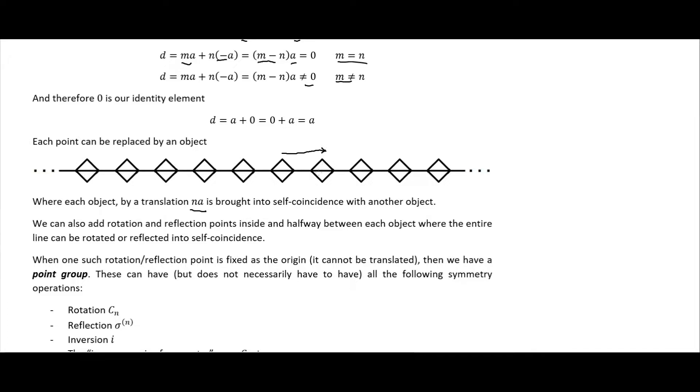We can also add points inside or at some place between two of them where now we could rotate the entire thing around 180 degrees and it would bring it once again into self coincidence with itself. We can do that with reflection points, so if we reflect across there or reflect across there it would bring the entire line into self coincidence, assuming this is an infinite line which is why I put the dots on both sides.